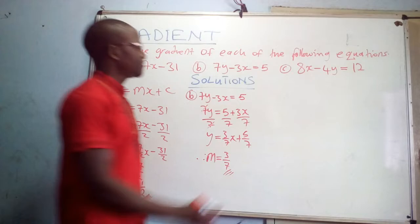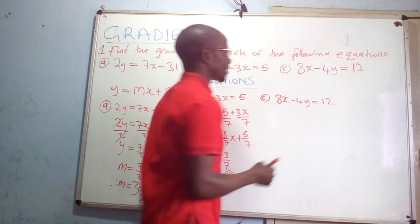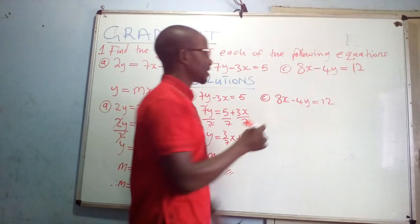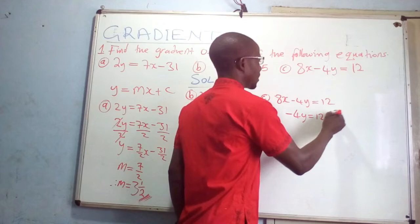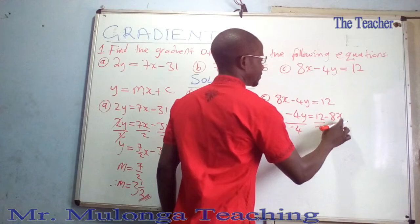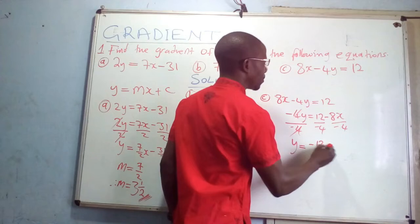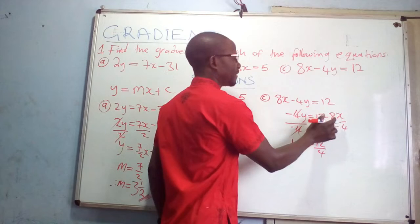For equation C: 8x - 4y = 12. To express this in the form y = mx + c, make y the subject. Rearranging gives -4y = 12 - 8x. Divide throughout by -4: negative divided by negative is positive, so be careful with signs.